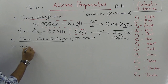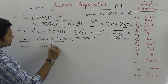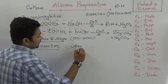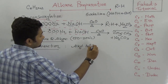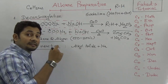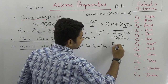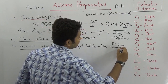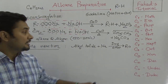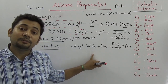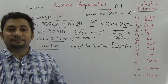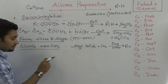The Wurtz reaction: alkyl halide reacts with sodium metal in the presence of dry ether to produce alkane and sodium halide. The environment must be dry ether. The reaction is named after Charles Wurtz, and it is called the Wurtz reaction.